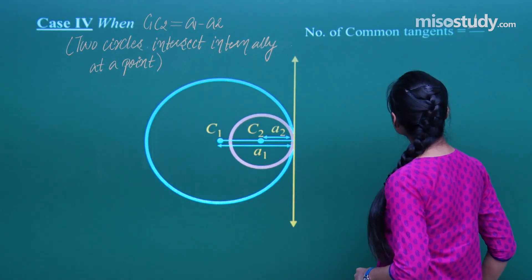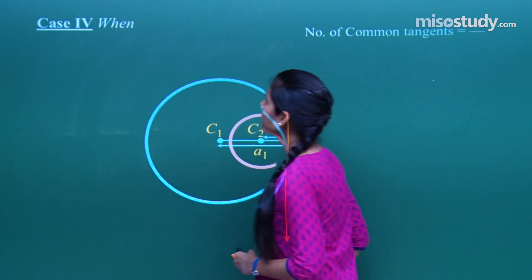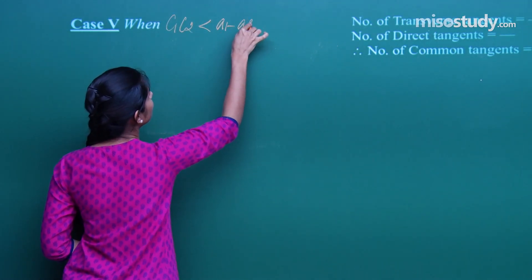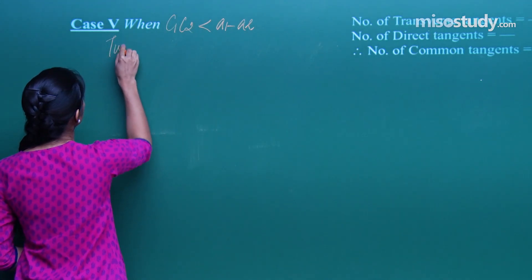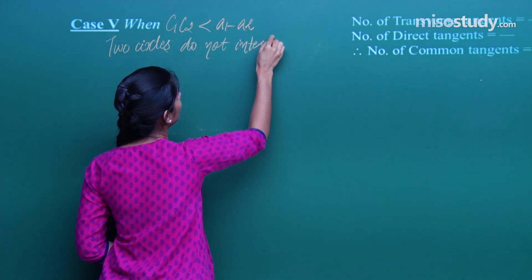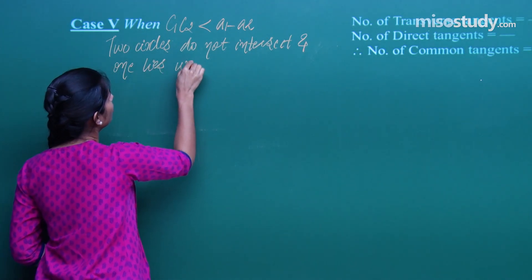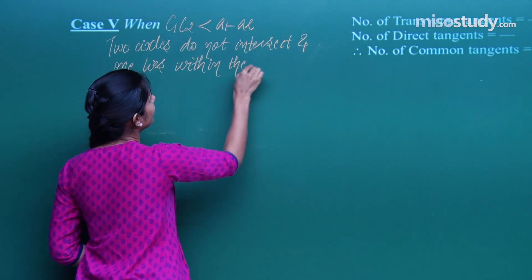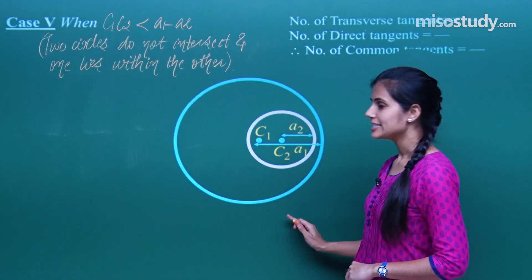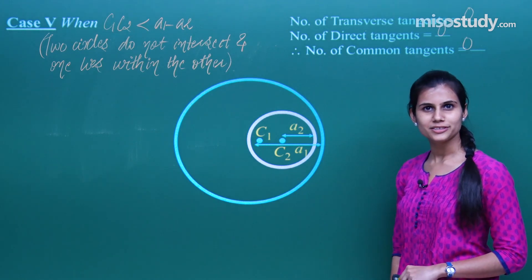The very last case is case 5: when the distance between the centres is less than the difference in the radii. In this case, the two circles do not intersect and one lies within the other. In this scenario, there is obviously no transverse, no direct, and hence no common tangent at all.